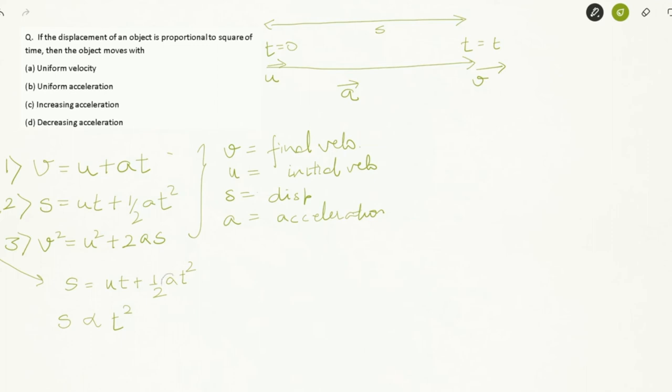What was the assumption in this equation? The assumption is A is constant. Only then we can arrive at this particular equation. Hence clearly in this case, S is directly proportional to T squared.